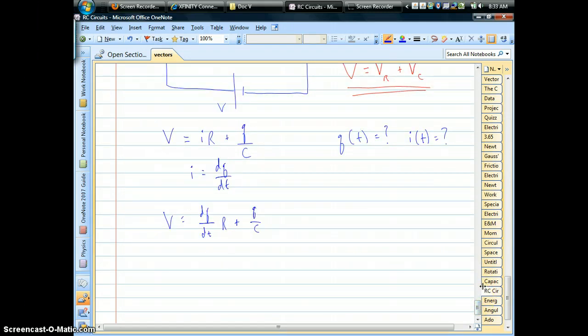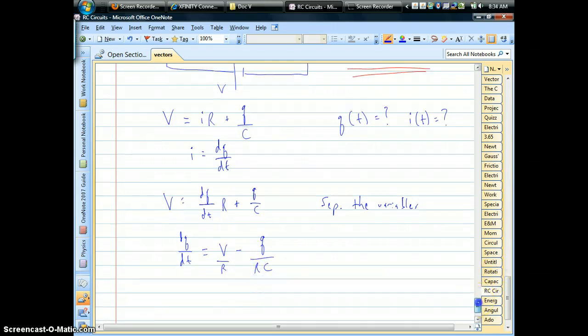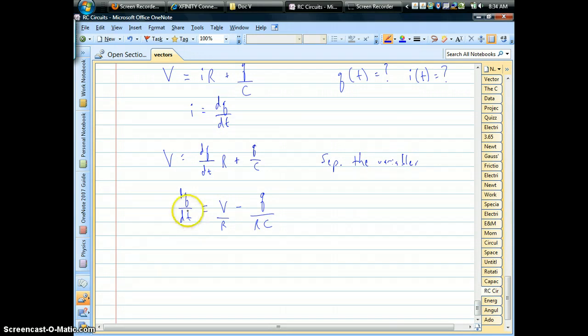It looks something like that. We have a first order differential equation. What we always try to do is we always want to try to separate the variables. In this case we'll be able to. I like to just try to isolate the derivative in the first place and see what you've got. We have the battery, subtract off q over C, and divide through by the resistance. In order to separate the variables, the only way to do it is if you divide through by that whole parenthesis.